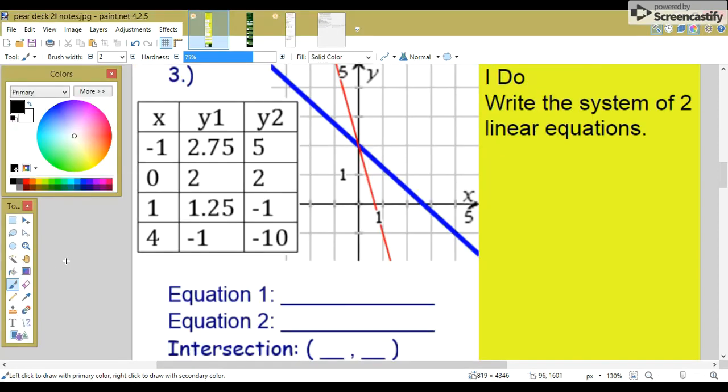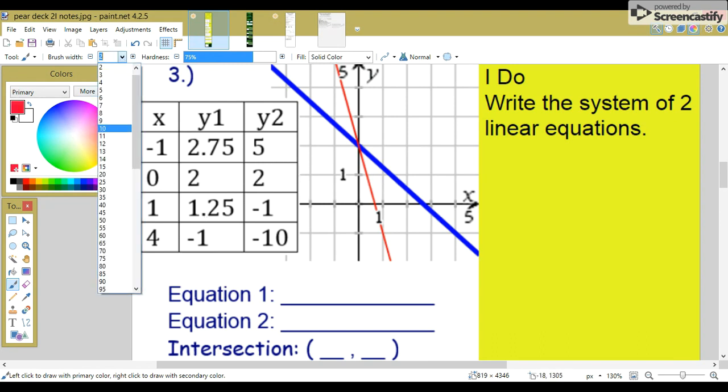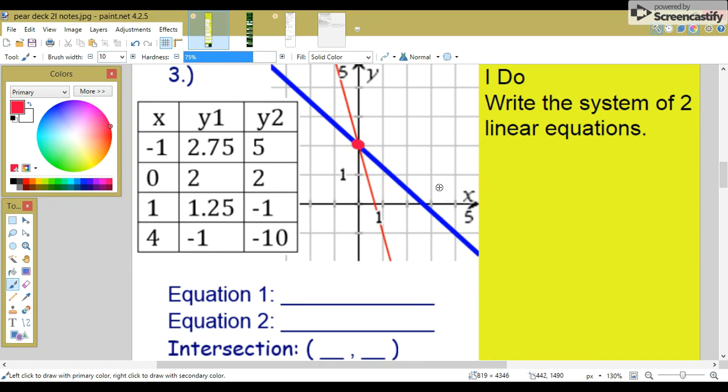Now we're going to label two equations on the same graph. Equation one is the thick blue line. We're writing a system of two linear equations. It's a system because there are two equations here, not just one. Let's find our lattice points. This is a decreasing slope, so it's negative. Let's make our triangle.